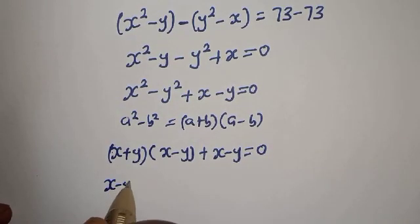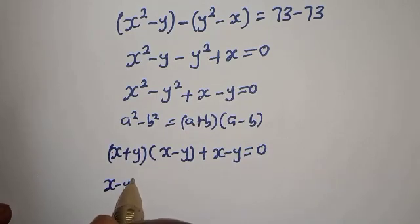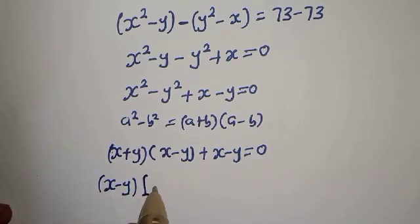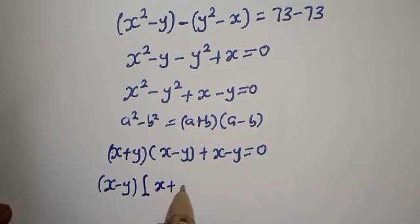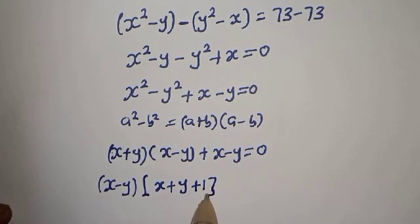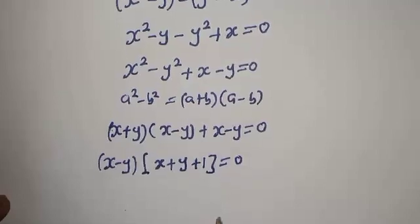Factoring out (x minus y), we get (x minus y) times (x plus y plus 1) is equal to 0.